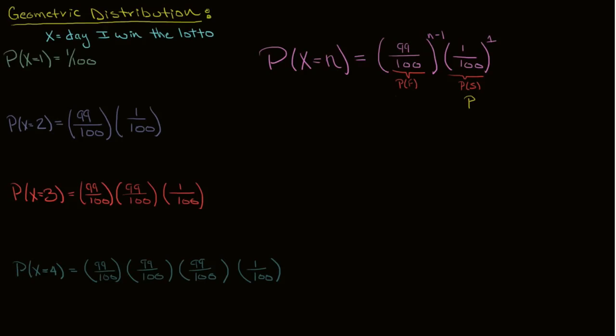And because they're complements, our probability of failure is just 1 minus p. When looking at things in the general sense, x goes from the day I win the lotto to the number of trials. Every single day that I tried to win the lotto was a single trial. So the probability that x equals n is the probability that it takes n trials for me to succeed.